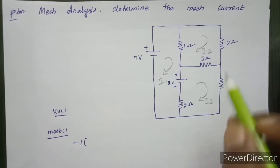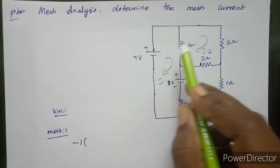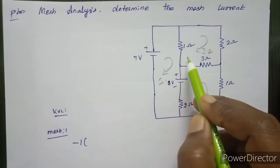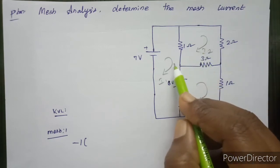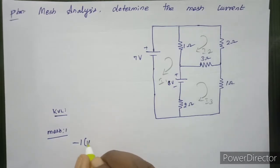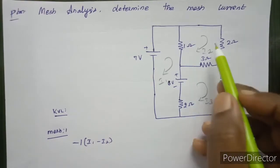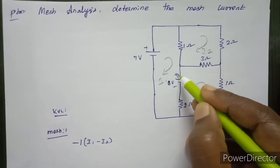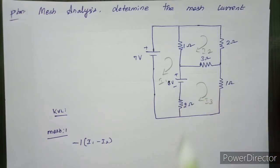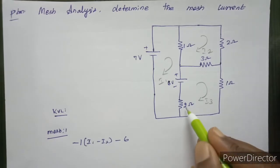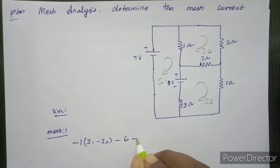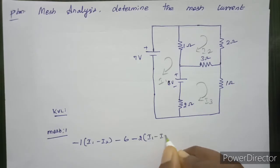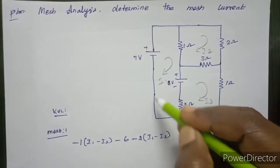R value is 1 and V equals I into R. For shared resistors, we use I1 minus I2. We use this for the shared resistance. There is a voltage source with plus and minus polarity, so it will be a drop — minus. There is also a resistor with I1 minus I3.